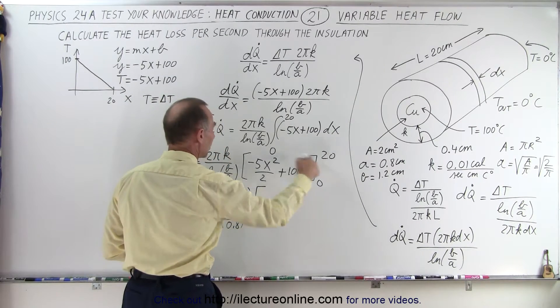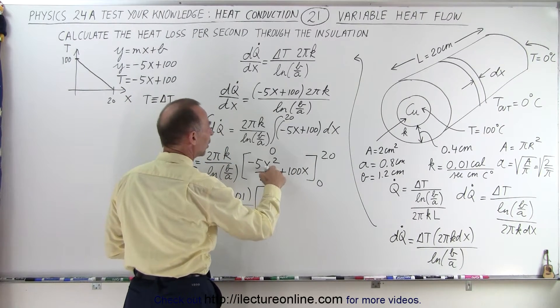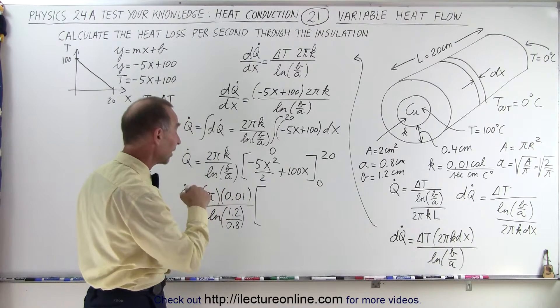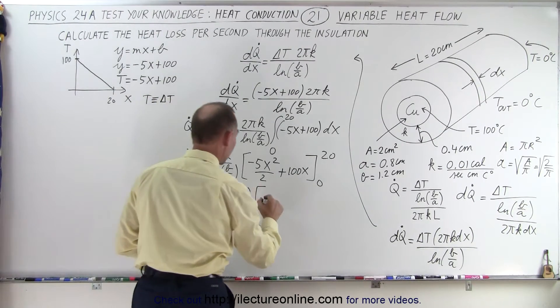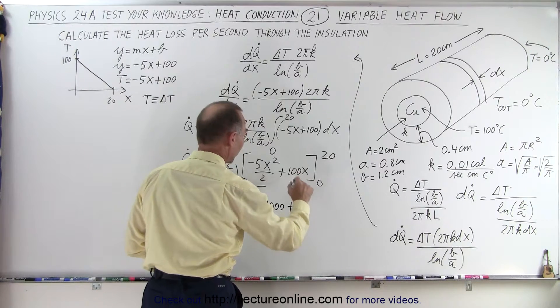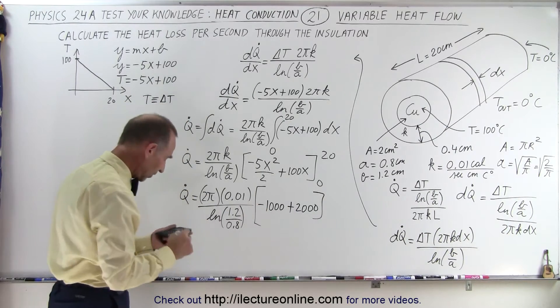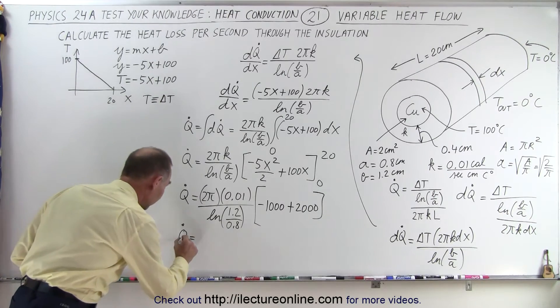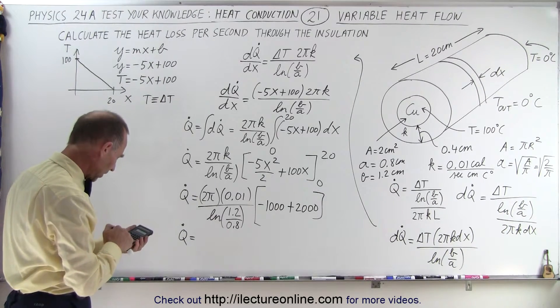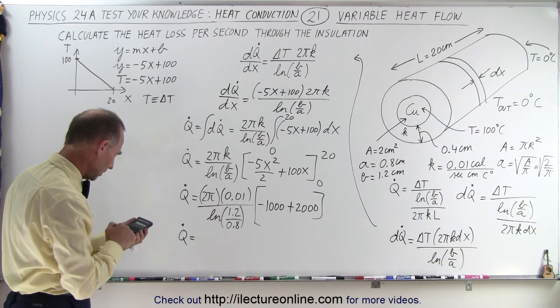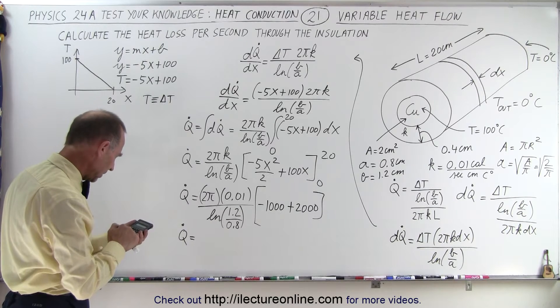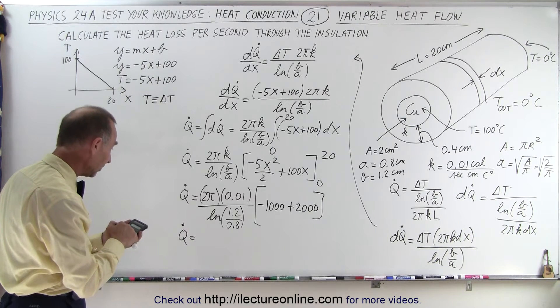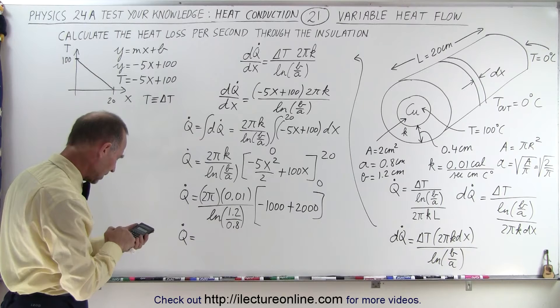Now we're going to multiply that times when we plug in the upper limit. That would be 40 times negative 5. 400 times negative 5 is minus 2,000. Divided by 2, that would be minus 1,000 plus 2,000. So that would be a net of 1,000. So Q̇, and of course that's going to be in calories per second. Q̇ is going to be equal to 1,000 times 0.01 times 2 times π divided by the natural log of 1.2 divided by 0.8. Equals 155 calories per second.